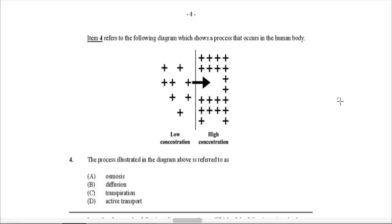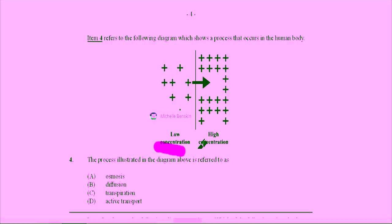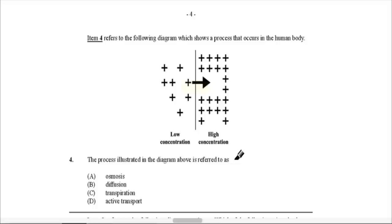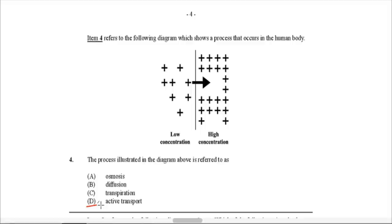Item 4 refers to a diagram showing a process in the human body. We see low concentration on one side and high concentration on the other side of a membrane, with molecules moving from low to high concentration. The process illustrated is active transport — the movement of molecules from a region of low concentration to a region of high concentration, going against the concentration gradient. This process requires energy from ATP.